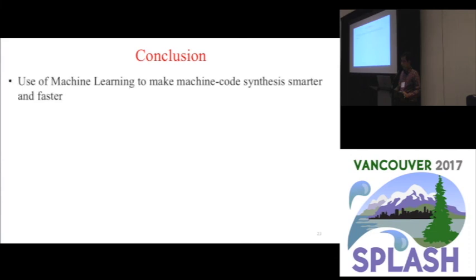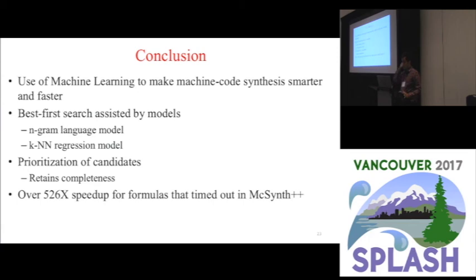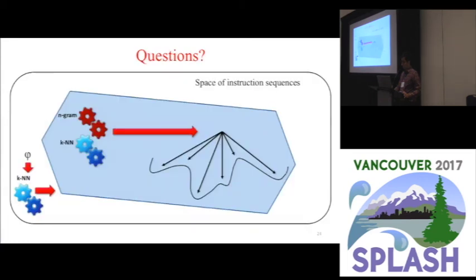So, to wrap up, we've introduced machine learning techniques for our style of machine code synthesis from specification formulas. We've used best first search assisted by models learned from readily available sources. Our models prioritize some candidates over others but retain the completeness property. And, over a baseline of a previous synthesizer we have a 526 fold speedup on formulas that timed out and a 4.5 fold speedup on remaining formulas. So, thank you very much for your time and that concludes my talk and I'd be happy to take any questions.